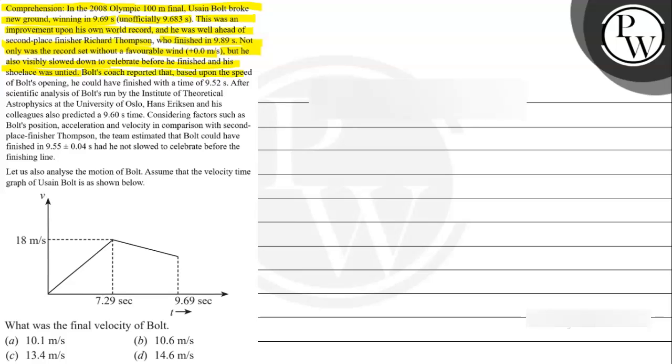Bolt's coach reported that based upon the speed of Bolt's opening, he could have finished with a time of 9.52 seconds. After scientific analysis of Bolt's run by the Institute of Theoretical Astrophysics at the University of Oslo, Erikson and his colleagues also predicted a 9.60 time, considering factors such as Bolt's position, acceleration, and velocity in comparison with second place finisher Thompson.